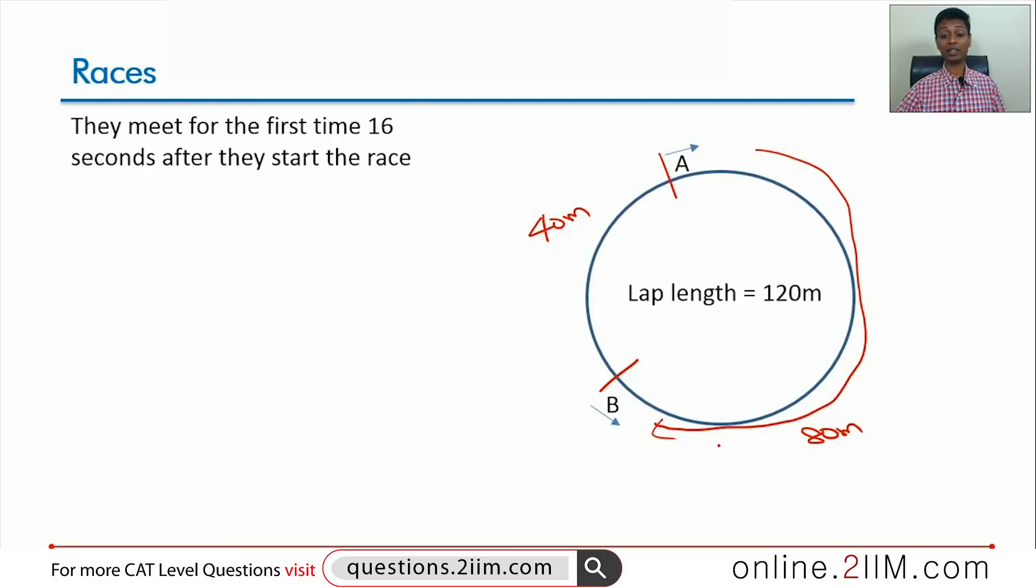Now we are told if B had started in the opposite direction, if B had started like this, then they would have met in 40 seconds time. What does that mean? B catches up with A in 40 seconds, so relative speed is 40 meters by 40 seconds, just 1 meter per second. Why relative speed? Because they are traveling in the same direction, B is catching up with A.